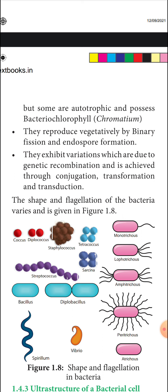Bacterial shape types include: diplococcus, staphylococcus, tetracoccus, sarcina, streptococcus, bacillus, and diplobacillus. Flagella arrangements include: monotrichous, lophotrichous, amphitrichous, peritrichous, and atrichous.